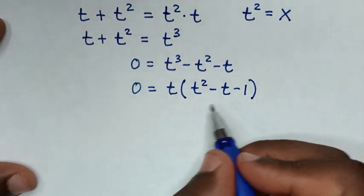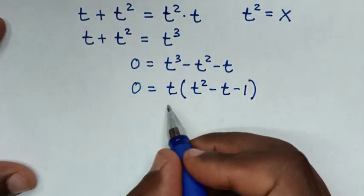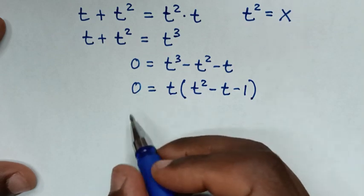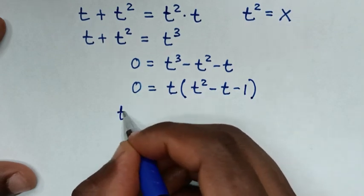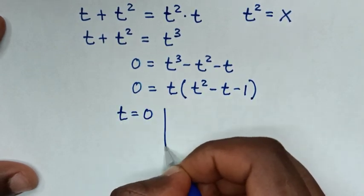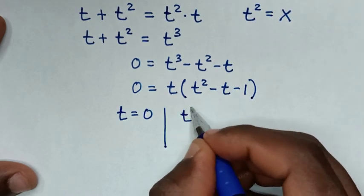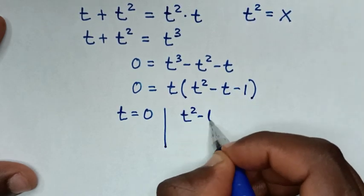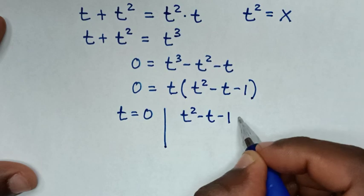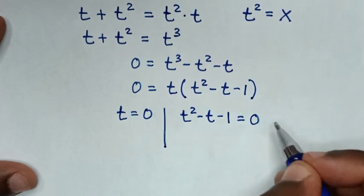From this factored form, we have two solutions. The first solution is t equals 0, and the second solution comes from the quadratic: t squared minus t minus 1 equals 0.